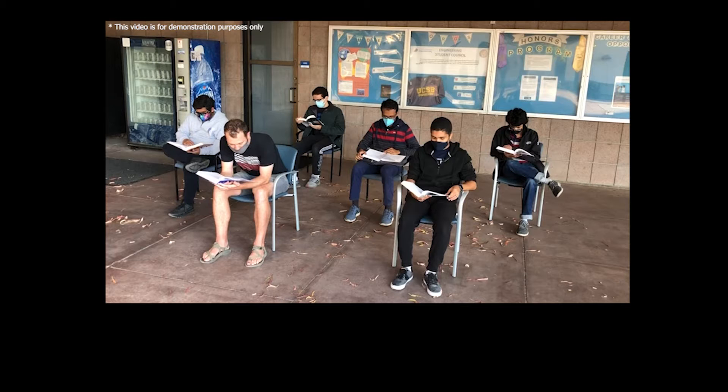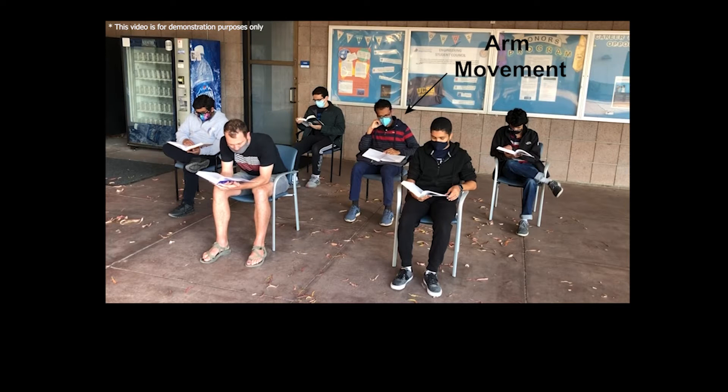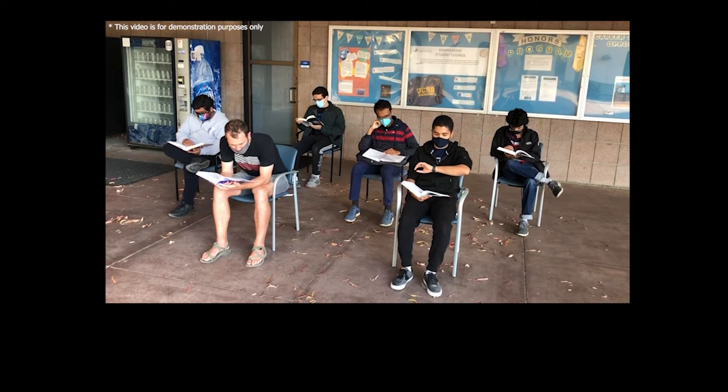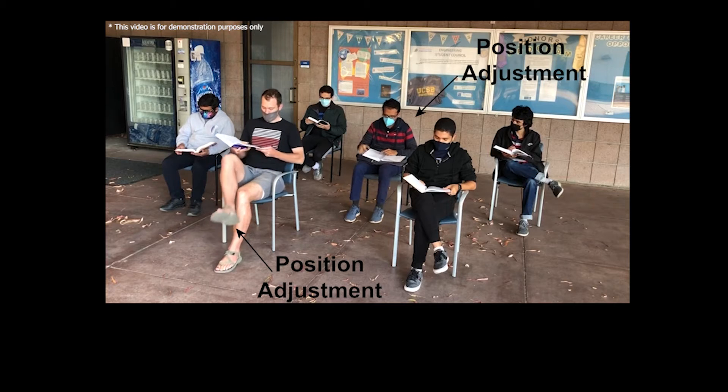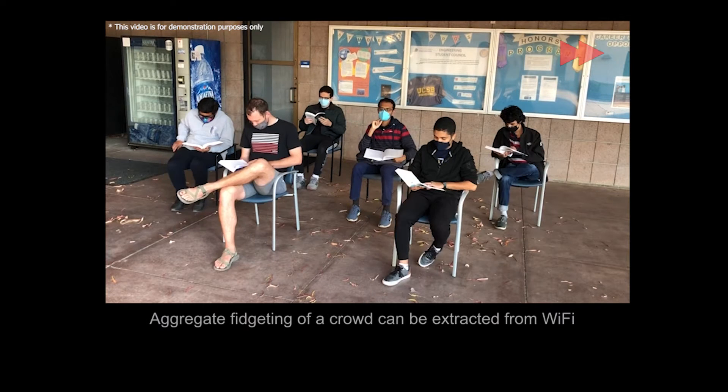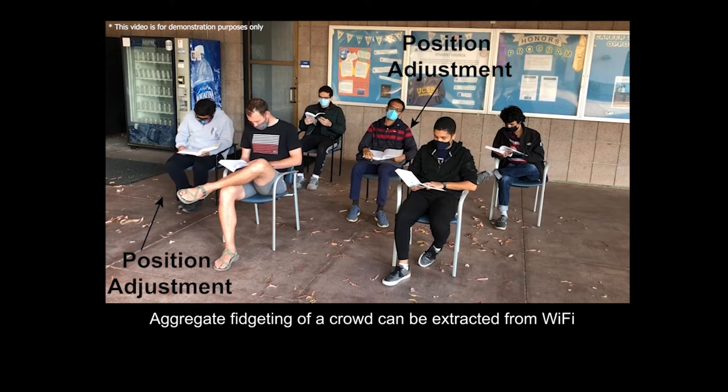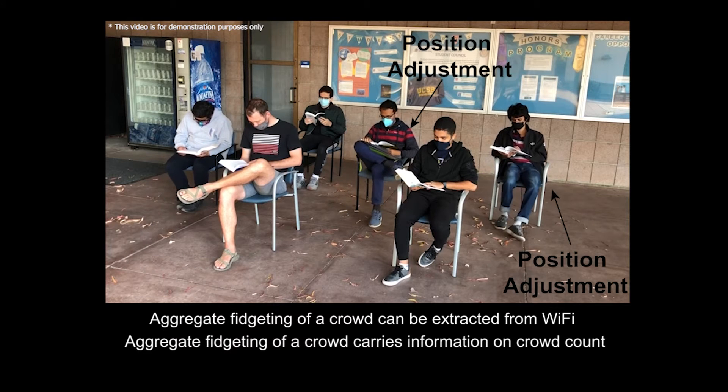We observe that while people are stationary, they engage in small in-place body movements called fidgets. We propose that the aggregate fidgeting of a crowd, which can be extracted from WiFi measurements, carries information on the total number of people.